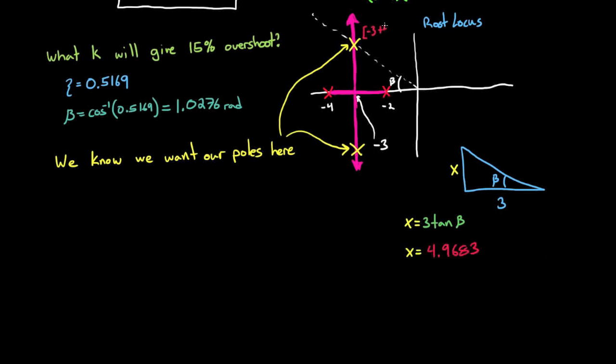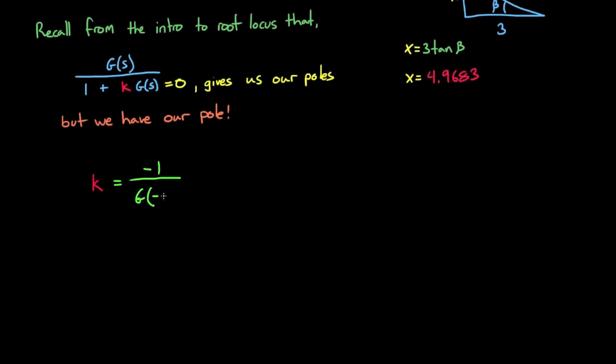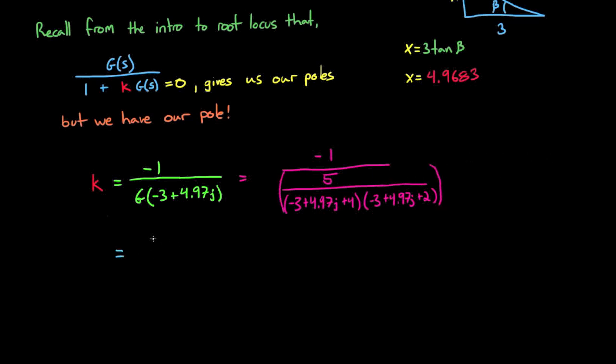Recall from the introduction to root locus, the closed loop transfer function is g divided by 1 plus k times g of s. If we set the characteristic equation to 0, we can solve for the closed loop poles. But we have our closed loop poles. We just solved for them. So now we can work backwards by setting s in the characteristic equation to one of our poles. I'm using minus 3 plus 4.97j for this example, but you could have chosen the negative one too. Now the only unknown in this equation is the gain k, which we can solve for. And we get 5.14.